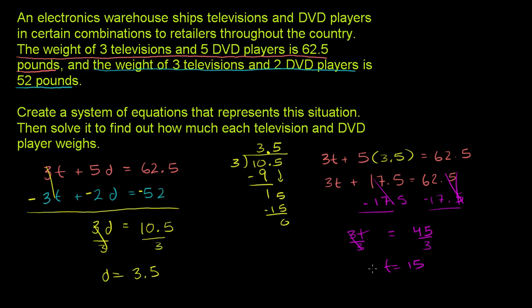So we've solved our system. The weight of a DVD player is 3.5 pounds, and the weight of a television is 15 pounds. And we're done.